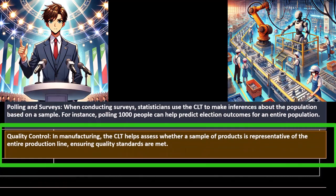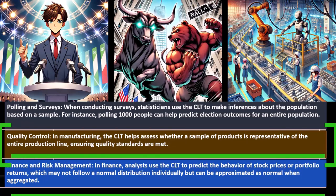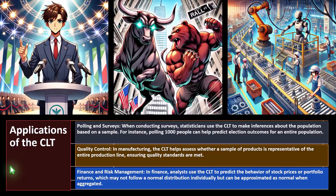Quality control and manufacturing: the CLT helps assess whether a sample of products is representative of the entire production line, ensuring quality standards are met. Whether it's an automated assembly line, an assembly plant, or measuring the weight of a bag of lettuce, sampling helps test accuracy. Finance and risk management: in finance, analysts use the CLT to predict the behavior of stock prices or portfolio returns, which may not follow a normal distribution individually, but can be approximated as normal when aggregated.